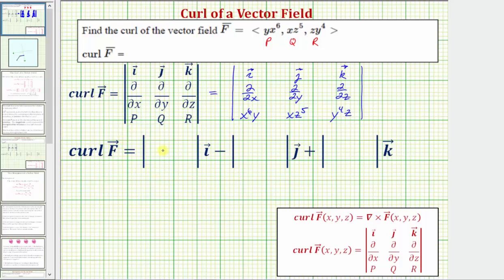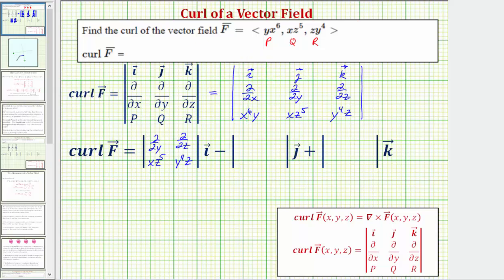For the first two by two determinant, we eliminate the row and column of the i vector — so we eliminate the first row and the first column. The remaining elements give us the partial with respect to y, the partial with respect to z, x to the sixth y, and y to the fourth z, times the i vector. Minus, for the second two by two determinant, we eliminate the row and column of the j vector, so we eliminate row one and column two, which gives us the partial with respect to x, the partial with respect to z, x to the sixth y, and y to the fourth z.